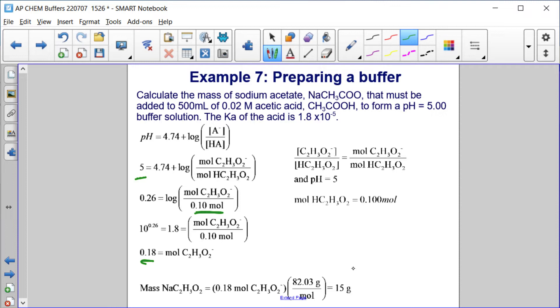And then we can just do a molar mass calculation to find the mass of the sodium acetate. So, 0.18 moles of acetate times 82.03 grams per mole of sodium acetate is 15 grams.